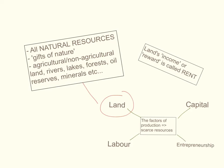For its contribution in the production process, land as a factor of production is rewarded or paid an income that economists refer to as rent. This is very different to the concept of rent that we know in everyday life, which is the money that you pay for leasing or renting an apartment. Rent in economics is the income of land when it contributes to the production process.